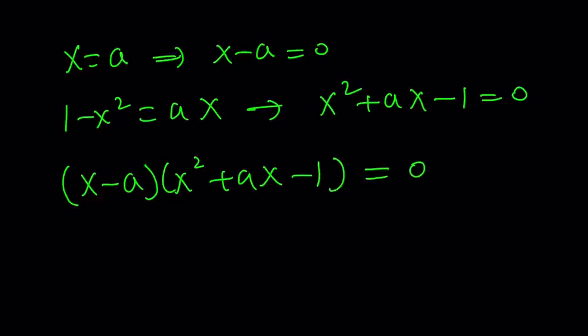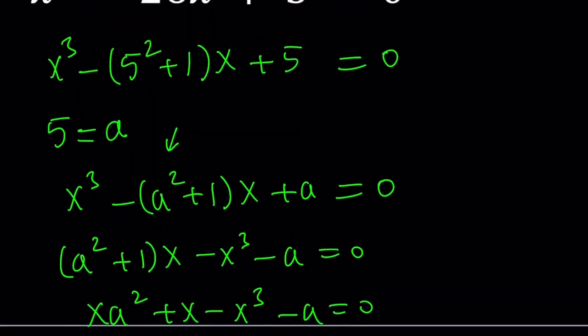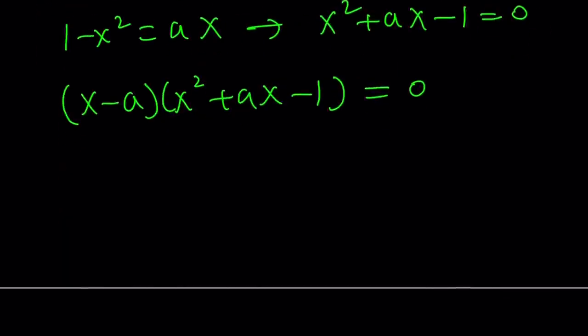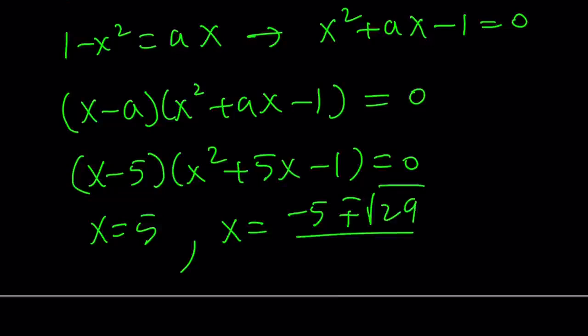The first factor is going to be x minus A. The second factor is going to be x squared plus Ax minus 1 equals 0. Now we know that A is equal to 5 because 5 is equal to A, that's our weird substitution. So we can replace A with 5 now. That's going to give us x minus 5, multiplied by x squared plus 5x minus 1 equals 0. This equation has three solutions. One of them is x equals 5. The other one comes from the quadratic formula. Negative B plus minus the square root of B squared minus 4AC. That's going to give you the square root of 29 divided by 2.